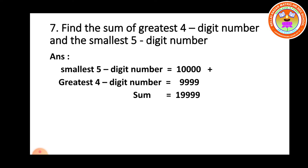Find the sum of greatest 4-digit number and the smallest 5-digit number. The smallest 5-digit number is 10,000. The greatest 4-digit number is 9,999.